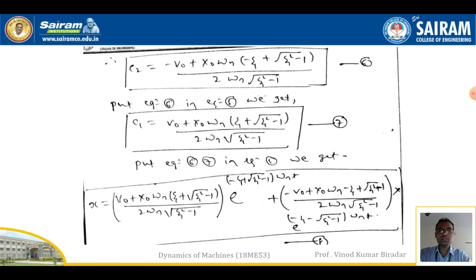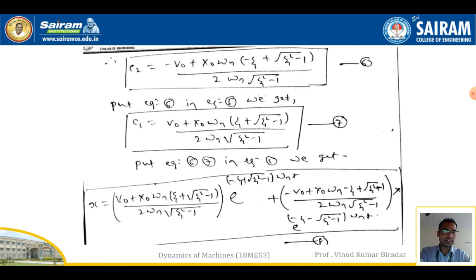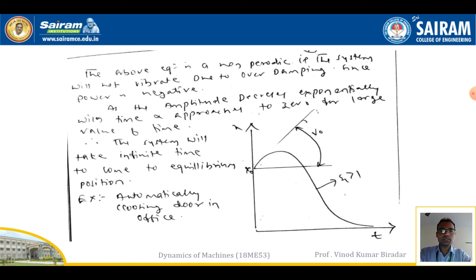The final overdamped equation of motion (equation 8) is: x = {[v₀ + x₀·ωn·(ζ + √(ζ²−1))] / [2·ωn·√(ζ²−1)]}·e^[(−ζ + √(ζ²−1))ωn·t] + {[−v₀ + x₀·ωn·(−ζ + √(ζ²−1))] / [2·ωn·√(ζ²−1)]}·e^[(−ζ − √(ζ²−1))ωn·t]. This is the system's overdamped equation of motion.